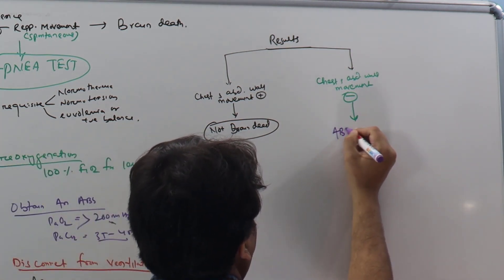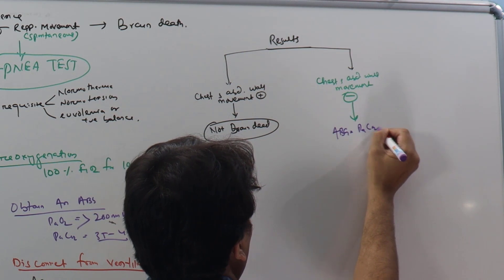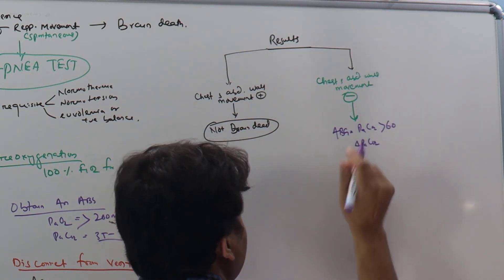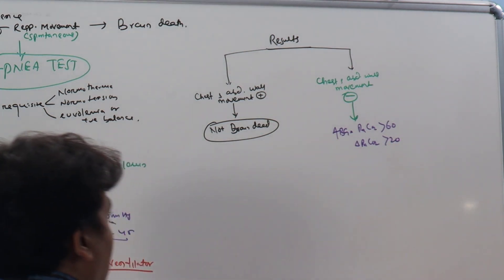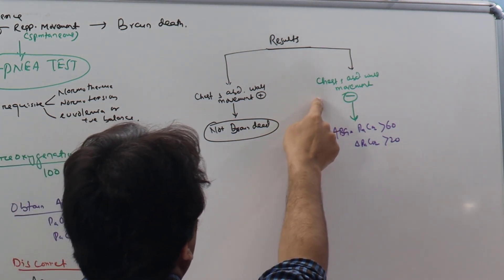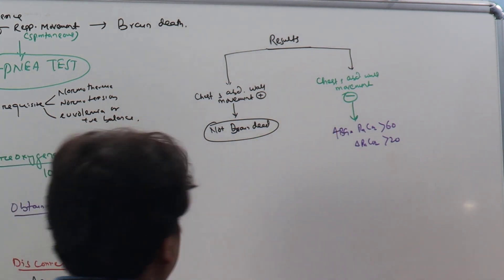In the ABG, if PaCO2 is more than 60 or delta PaCO2, that is change from the baseline, is more than 20, that means we have provided adequate stimulus to the brainstem but still it is not functioning because there is no movement of the chest and abdominal wall. So this means the patient is brain dead.